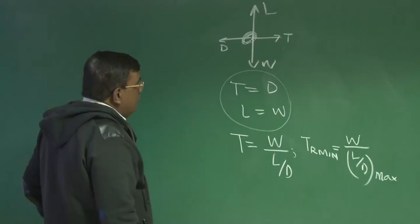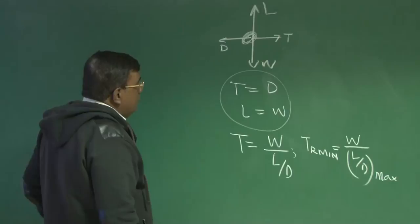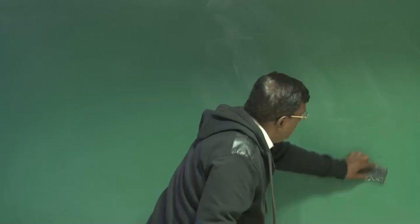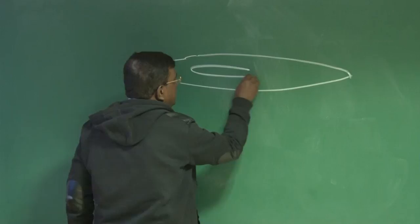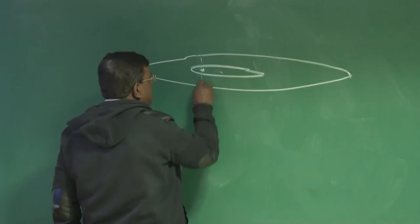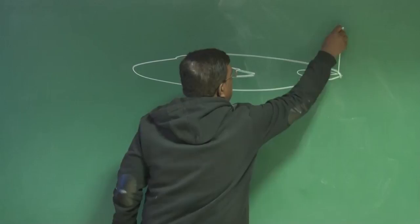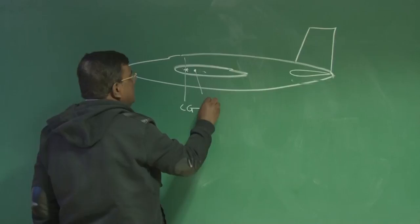And second thing, what is more important, that when I am thinking of an airplane, how does it fly? One thing I have realized that if this is my fuselage, this is my wing, right? Let us say this is somewhere it is Cg is here, center of gravity of the airplane and this is your horizontal tail, this is your vertical tail and let us say this is the aerodynamic center of the wing.